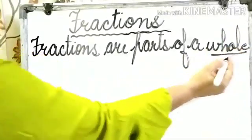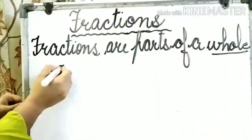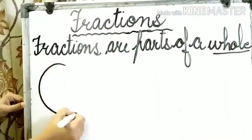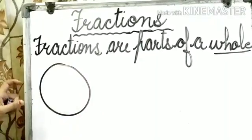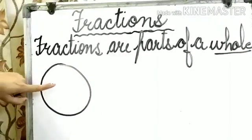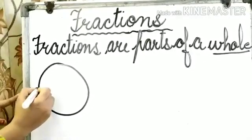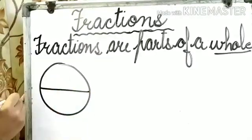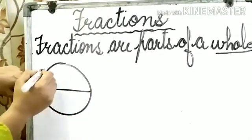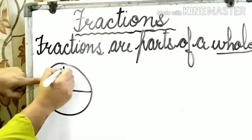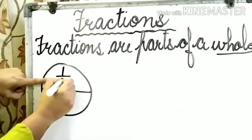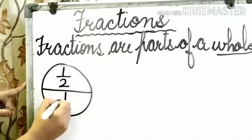Now what is a whole? This is one whole. But when a whole is divided into two equal parts, each part is known as half, or we can say one by two.